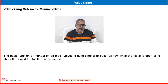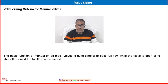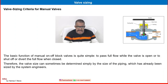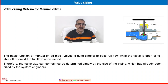Even though valve sizing criteria of manual valves provide some useful information, let us review what is available. The basic function of manual on-off block valves is quite simple: to pass full flow while the valve is open, or to shut off or divert the flow when it is fully closed. The valve size can sometimes be determined simply by the size of the piping, which has already been sized by the system engineers.